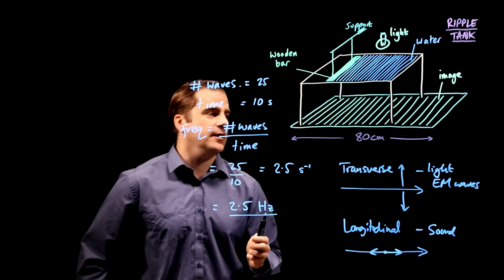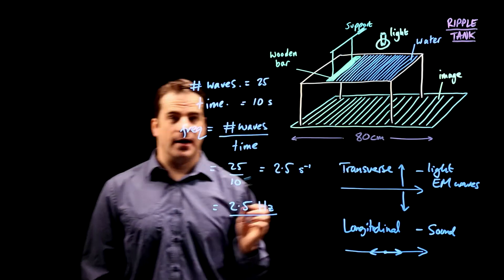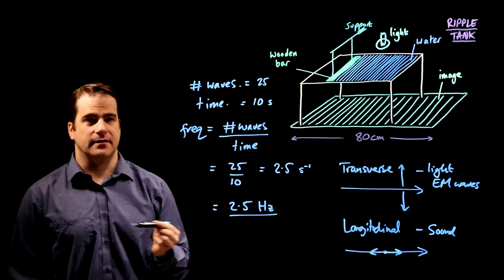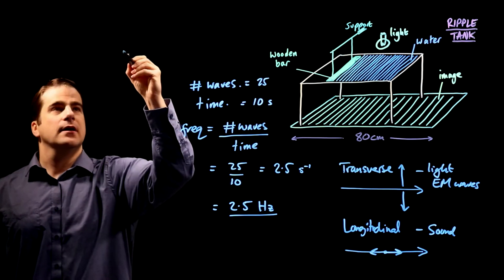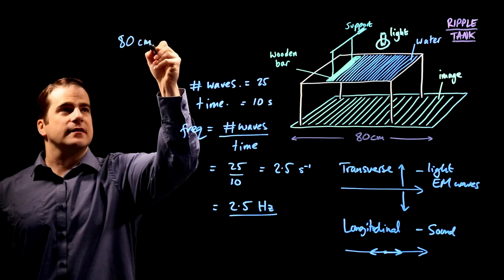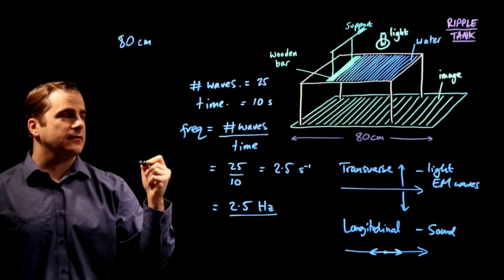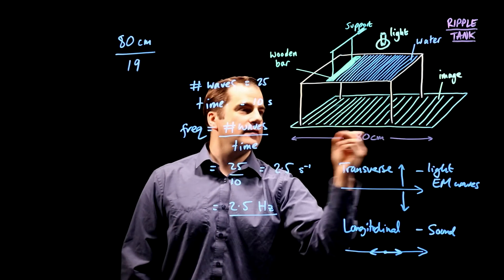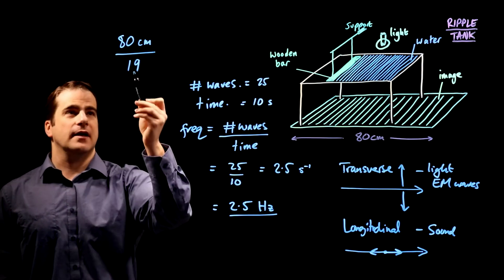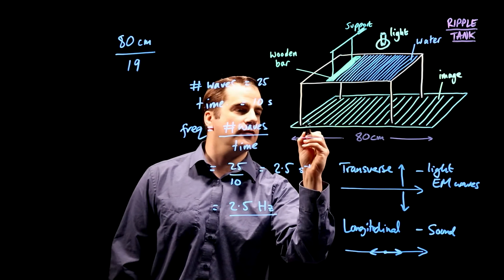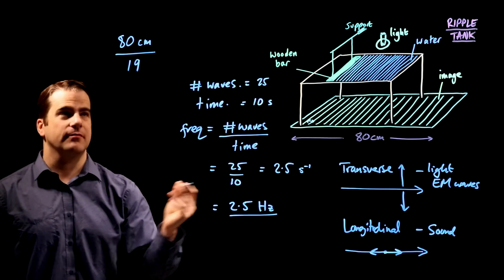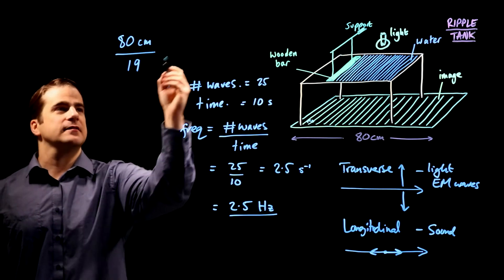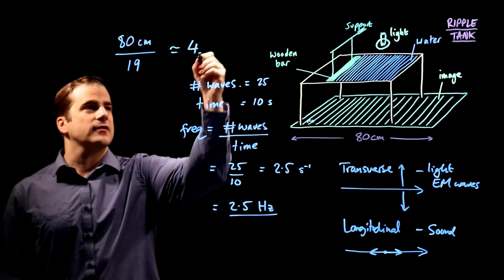It just wants the approximate wavelength. So what you have to do is count the number of waves. So you go 1234 and I make it 19 waves in 80 centimetres. So if you have an 80 centimetre distance, and you have 19 waves in that distance, then 80 divided by 19 will give you the length of one wave. In other words, the wavelength. 19 is roughly 20. 80 divided by 20 is approximately four centimetres.